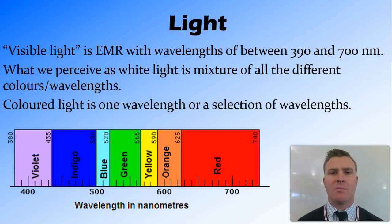We've previously talked about light as being part of the electromagnetic spectrum. In particular it's the point between around 390 to 700 nanometres. What we perceive as white light, so the light that comes from the sun, is a mixture of all these different wavelengths.